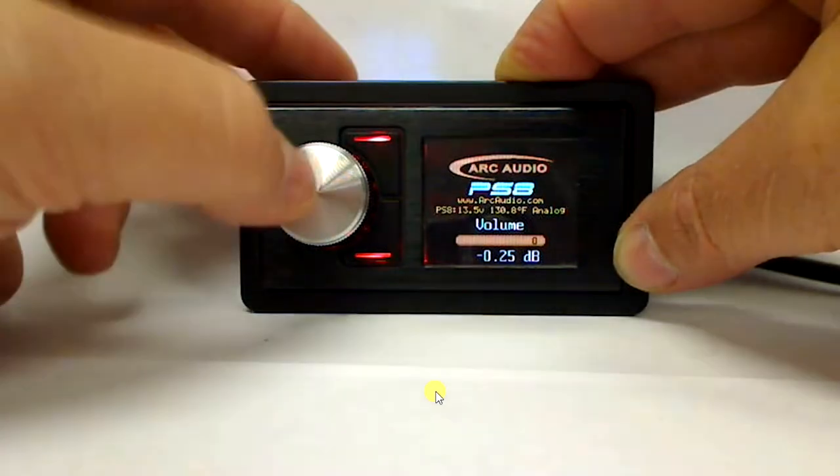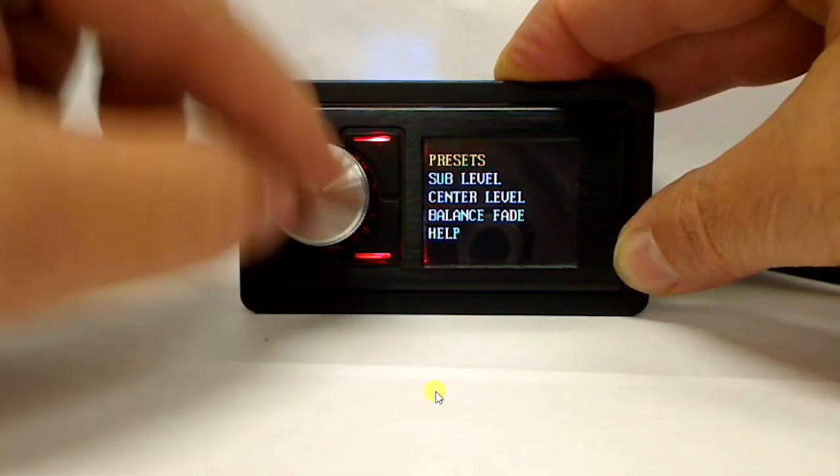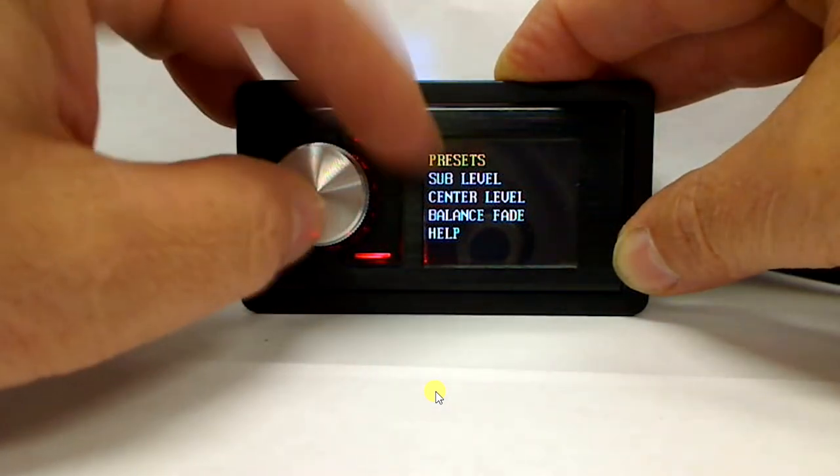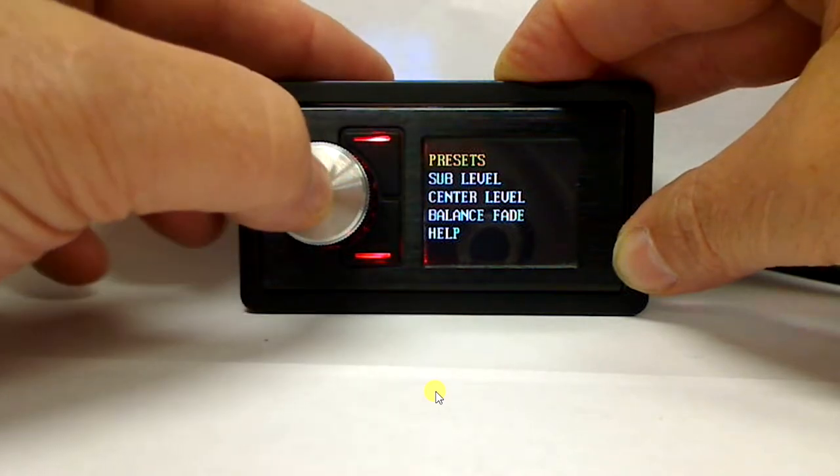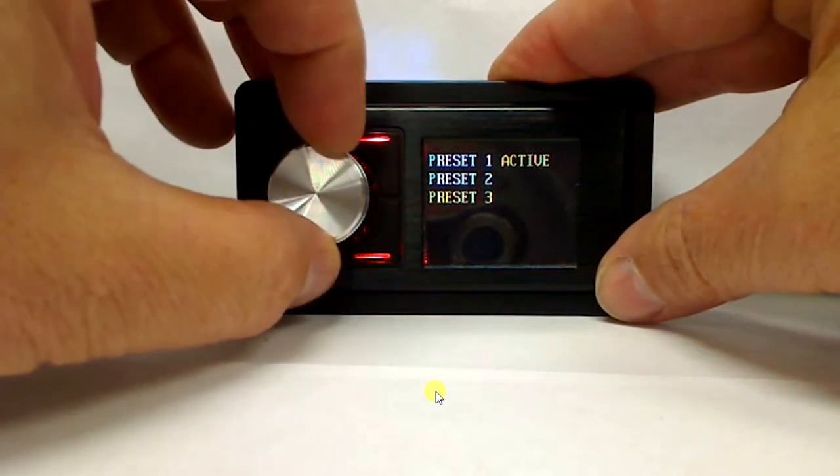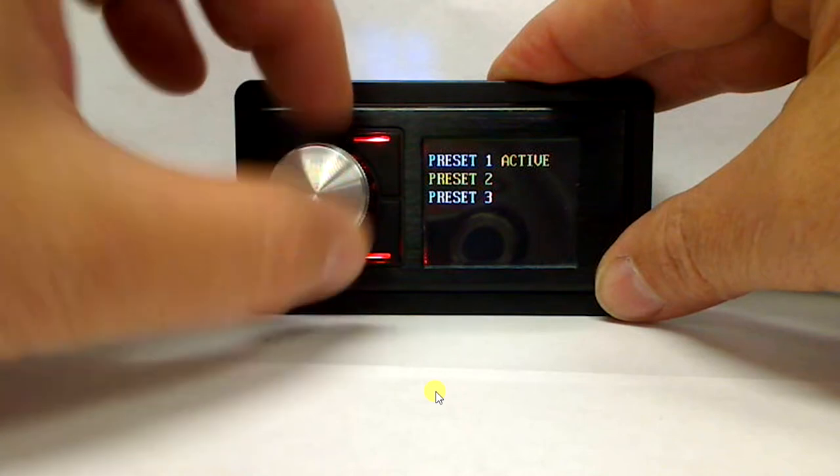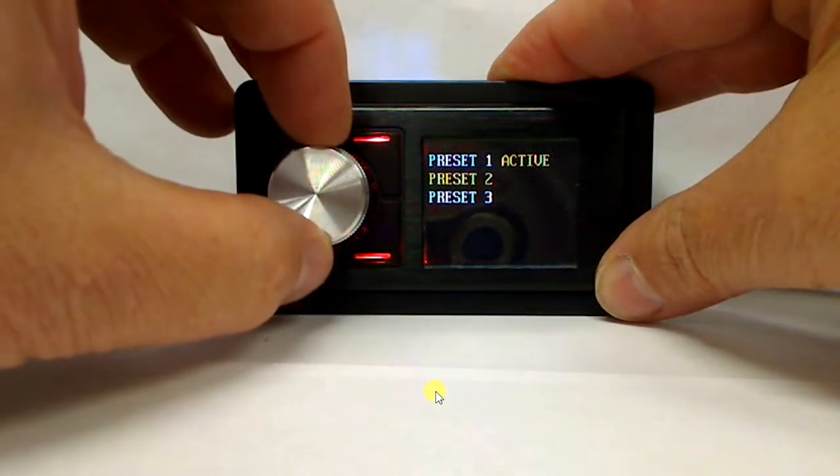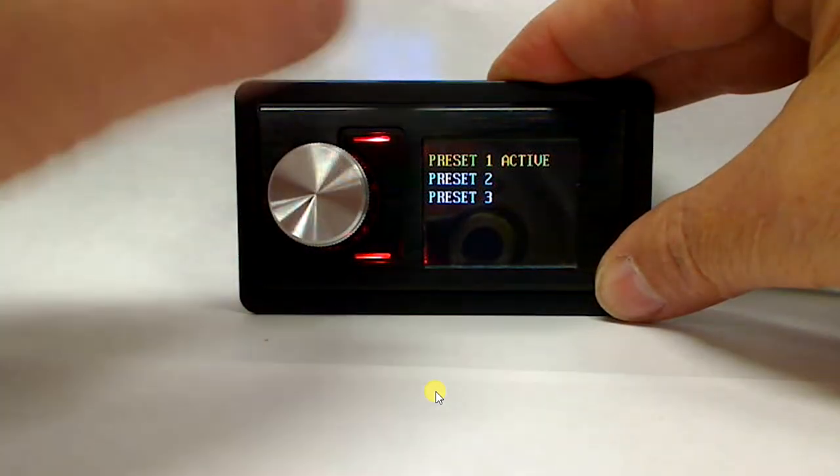So first off we have our user interface menu. Go ahead and press the rotating encoder on the tact and you'll see we have presets, sub level, center level, balance, fade, and help. So if we want to go into presets we just simply select that one more time and you see that we have the options here for preset one, two, and three. And if we want to select it we simply just press the momentary button in the middle of the encoder.